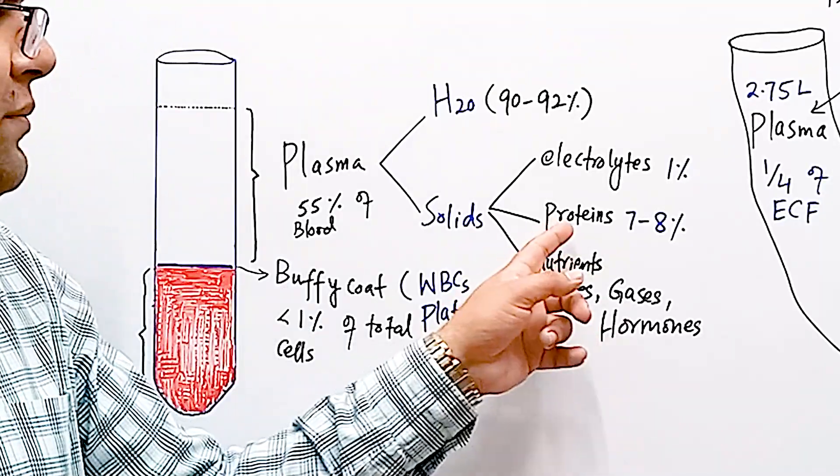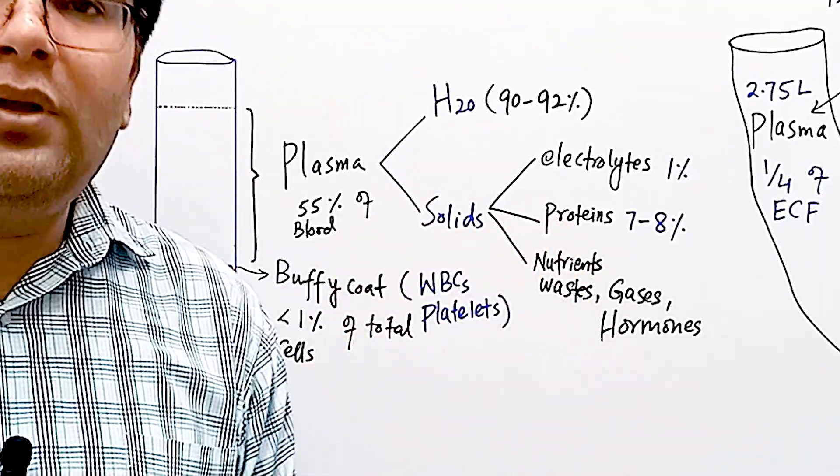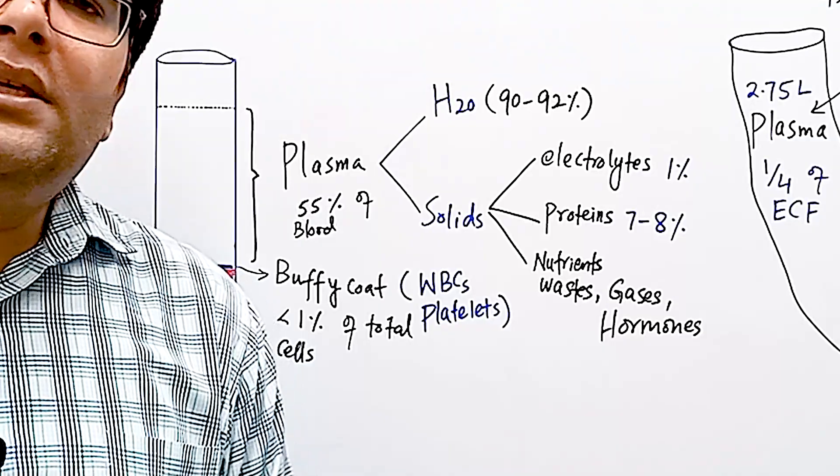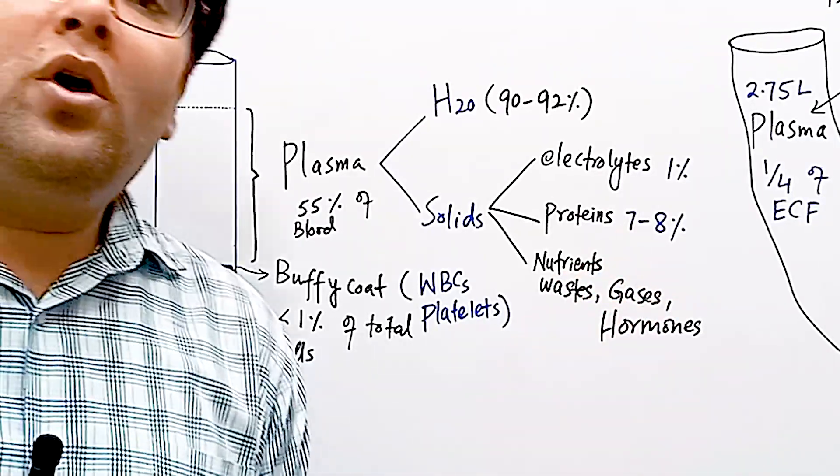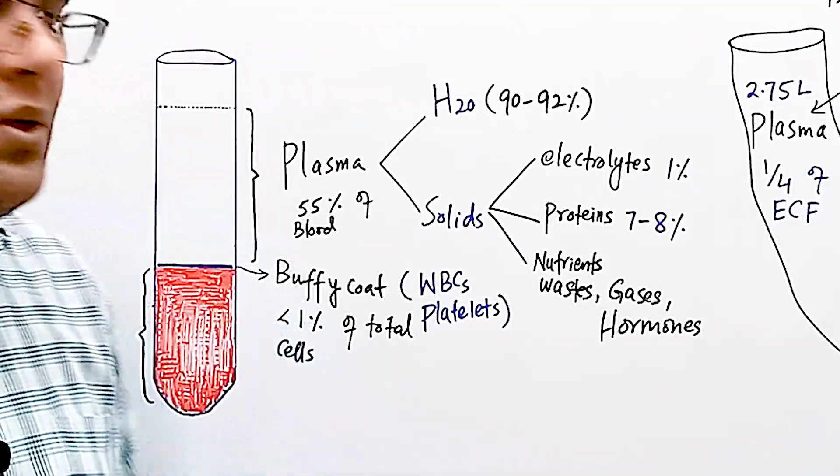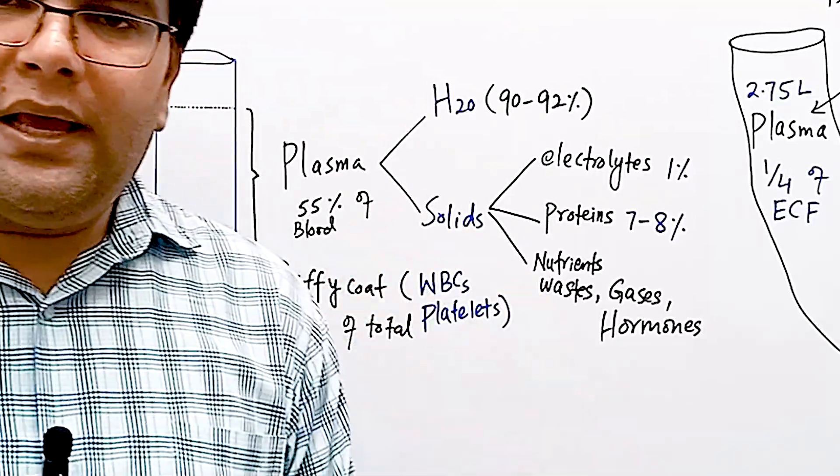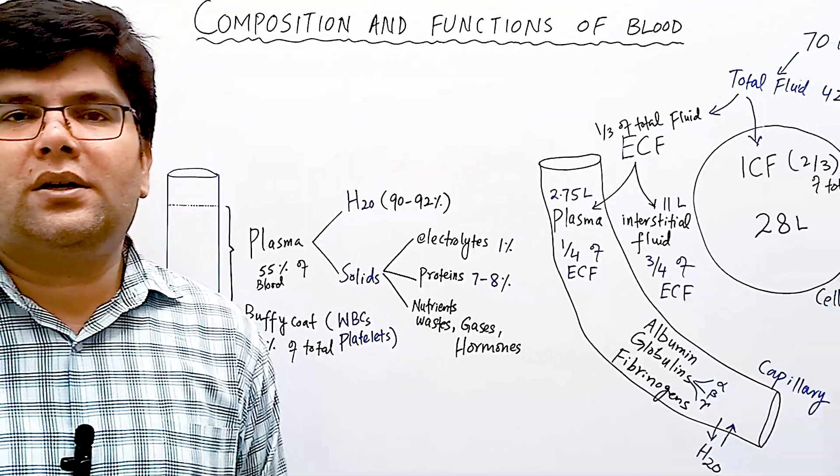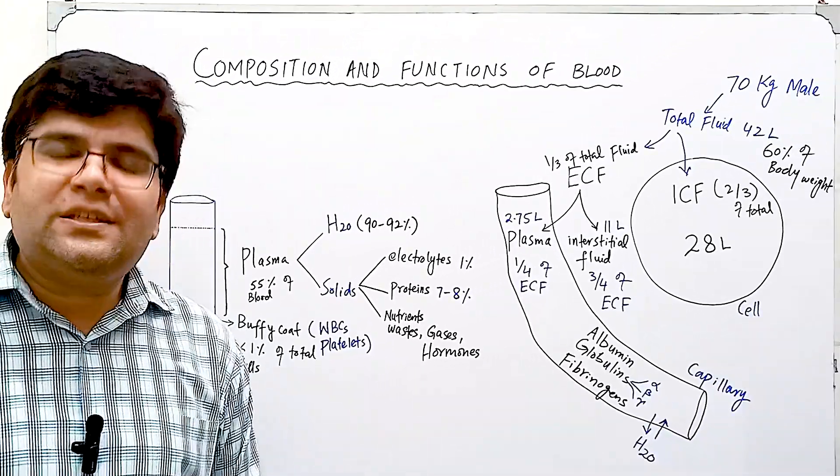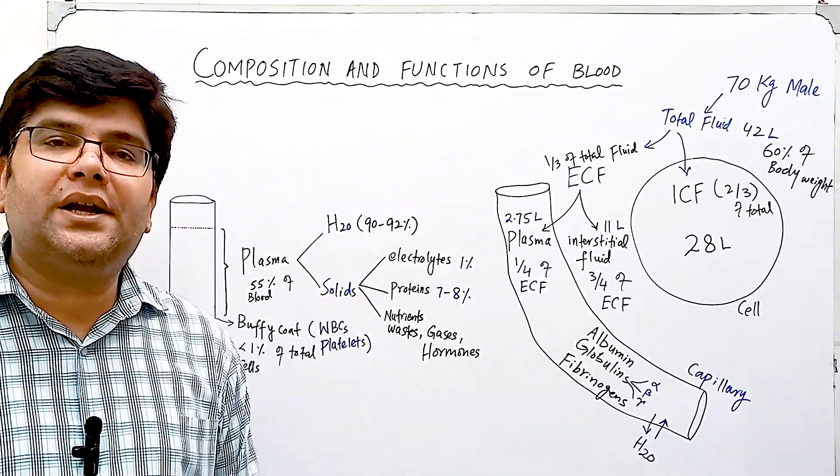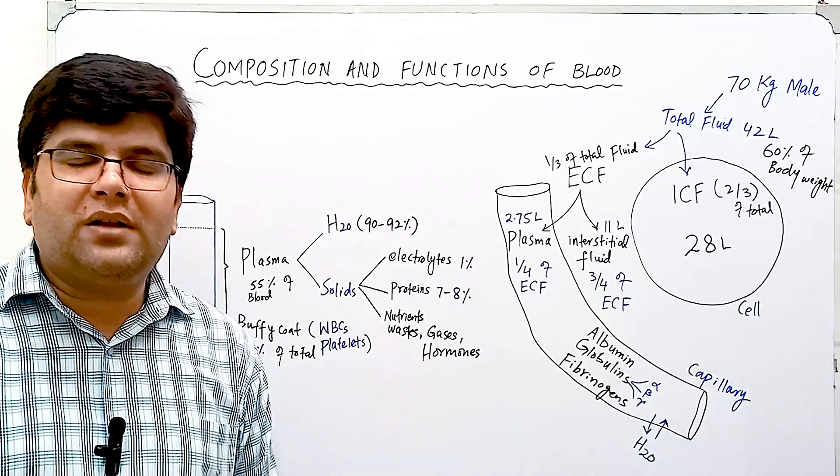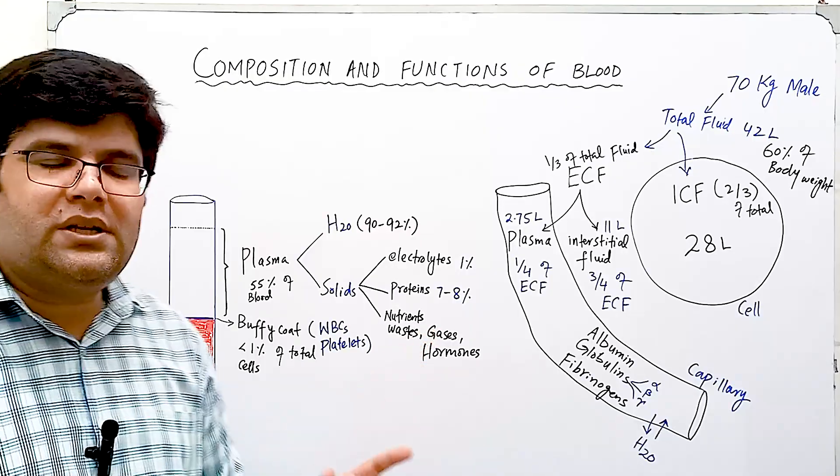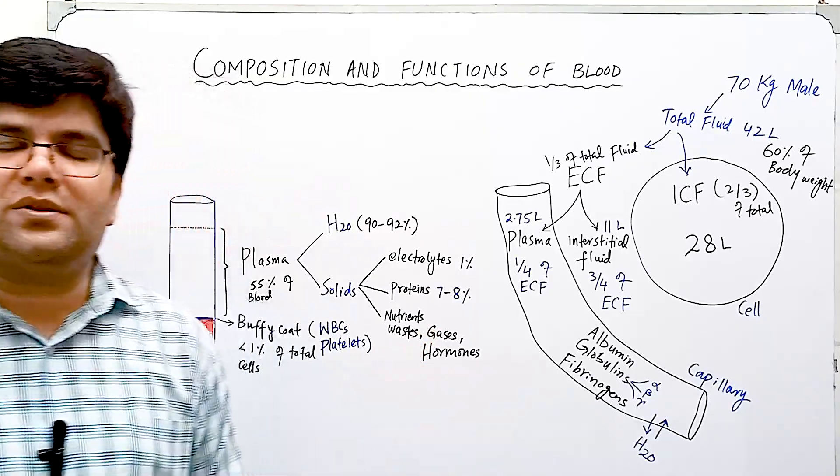The most abundant organic component of plasma is plasma proteins like albumin, globulins, and fibrinogen, which are seven to eight percent of total weight of plasma. Small amounts of other organic substances are also dissolved in plasma: nutrients like amino acids, fatty acids, carbohydrates like glucose; waste products like urea, uric acid, creatinine, and bilirubin; other substances like hormones and vitamins; and gases like oxygen and carbon dioxide.